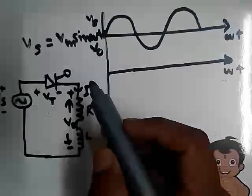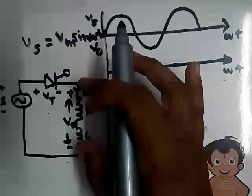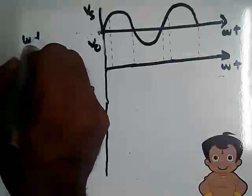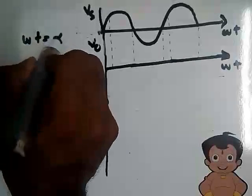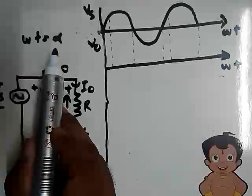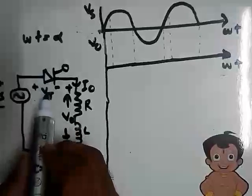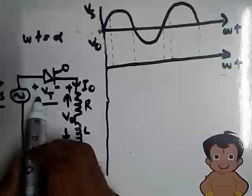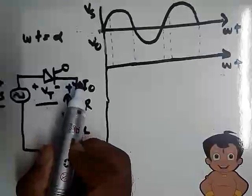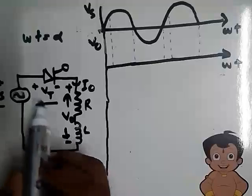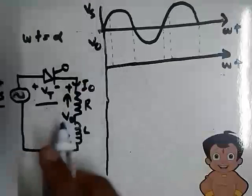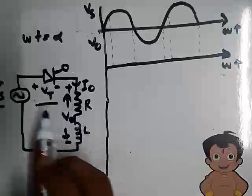Next we have to obtain the voltage across the load, or the output voltage, that is V0. We are going to trigger the thyristor at ωt = α — that is, turn-on of the thyristor occurs at ωt = α. So at ωt = α, this thyristor acts as a short circuit, and the supply voltage is passed through the short circuit and through the load.